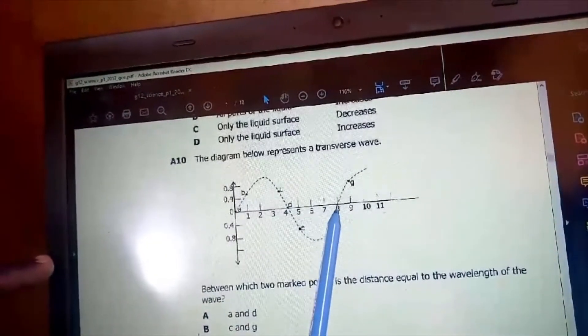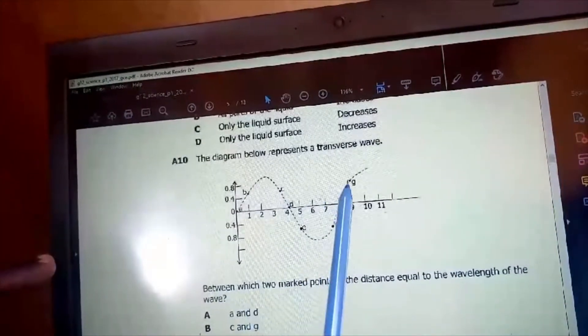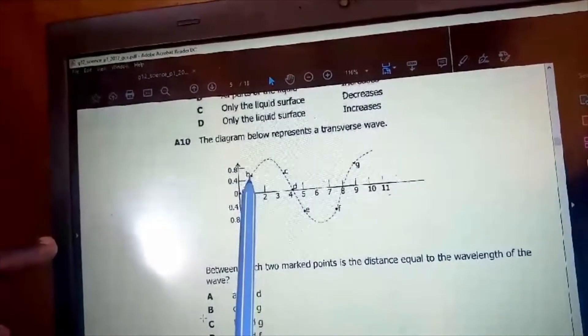Just going, and then when it reaches here, this was the point, this is one wavelength. So it should go to the same distance here. So it will be from B to G. This is one wavelength, from B to G.